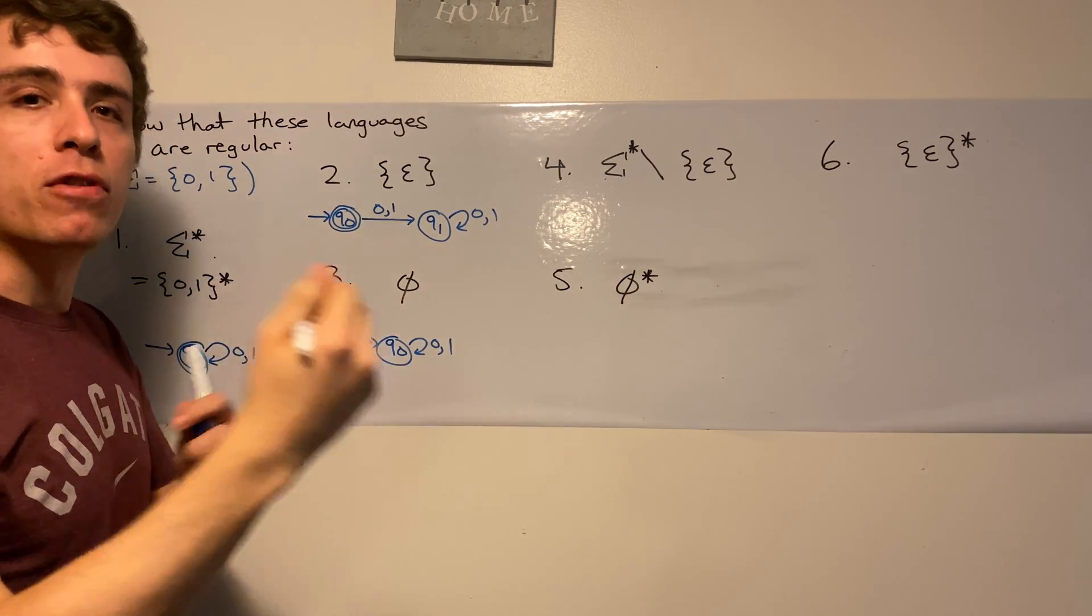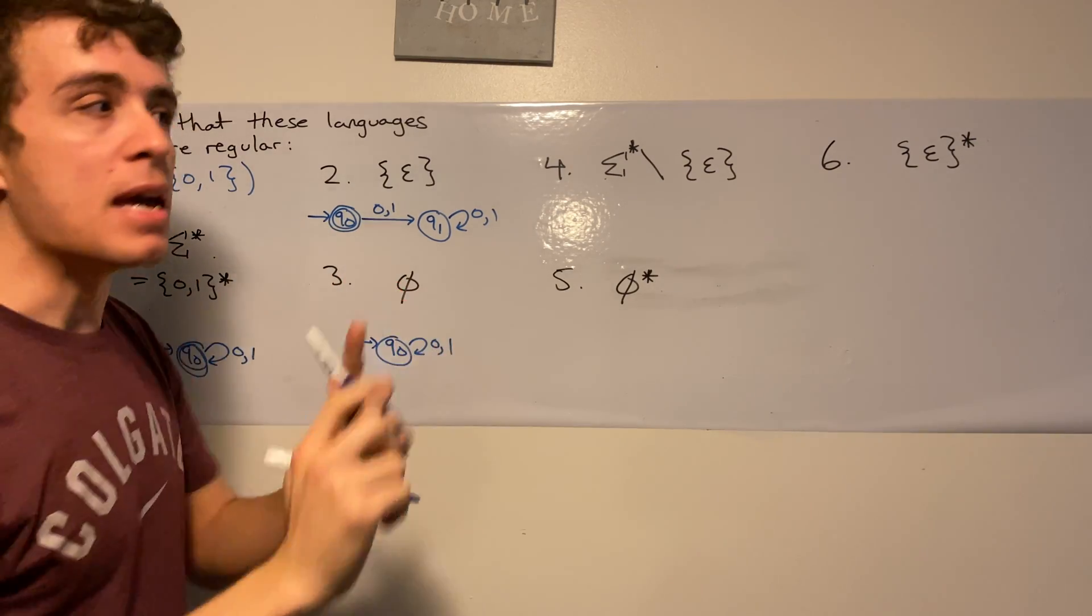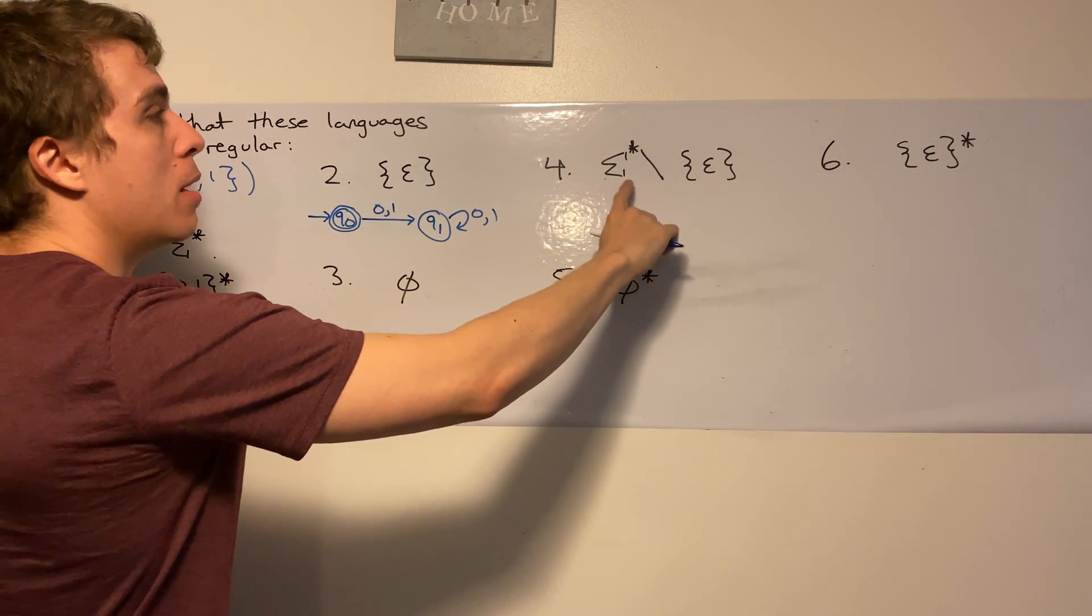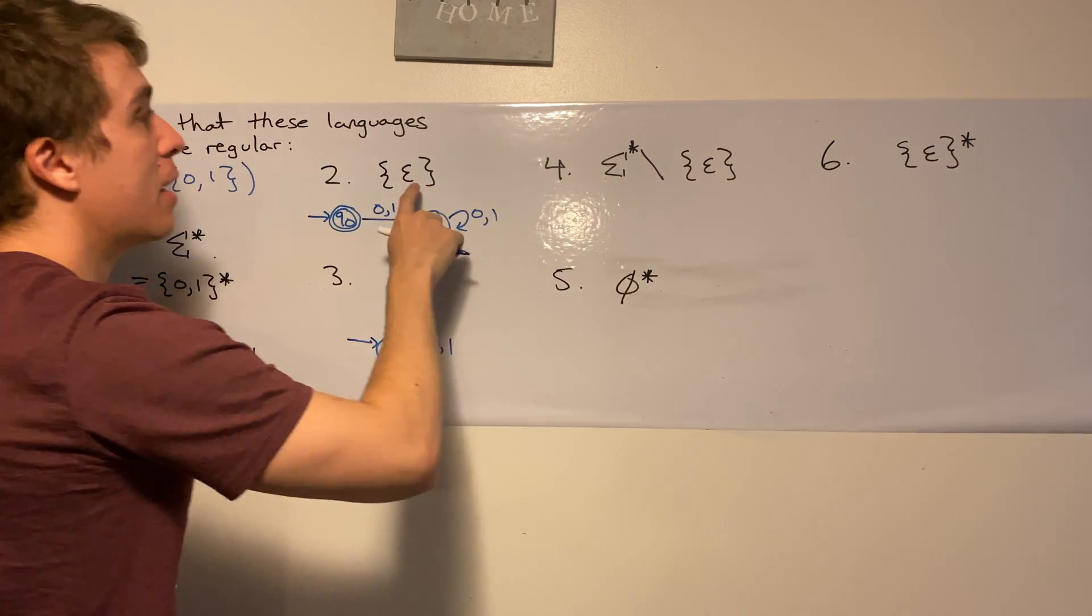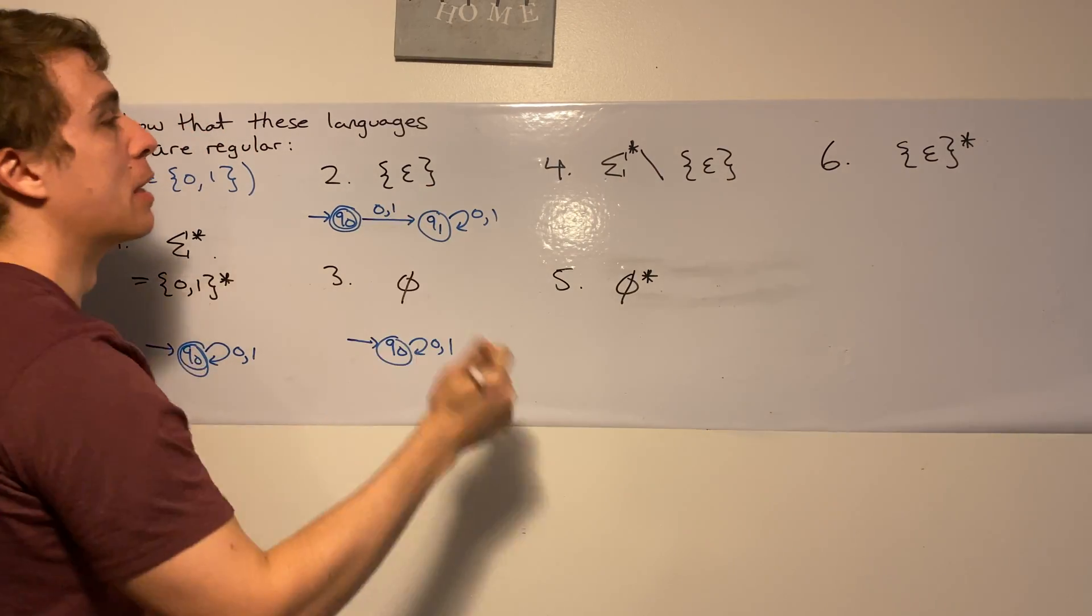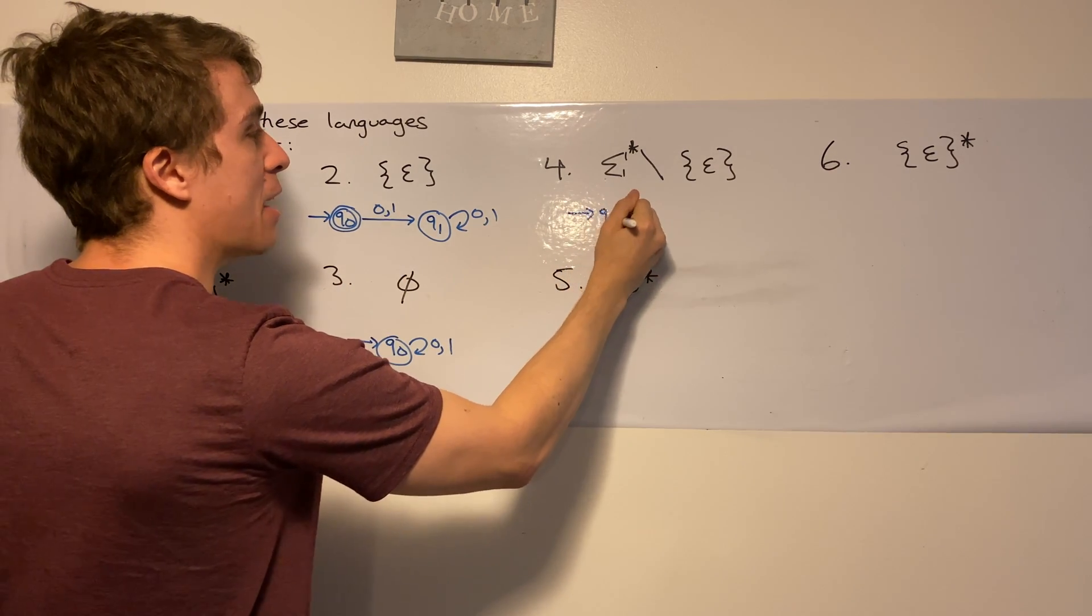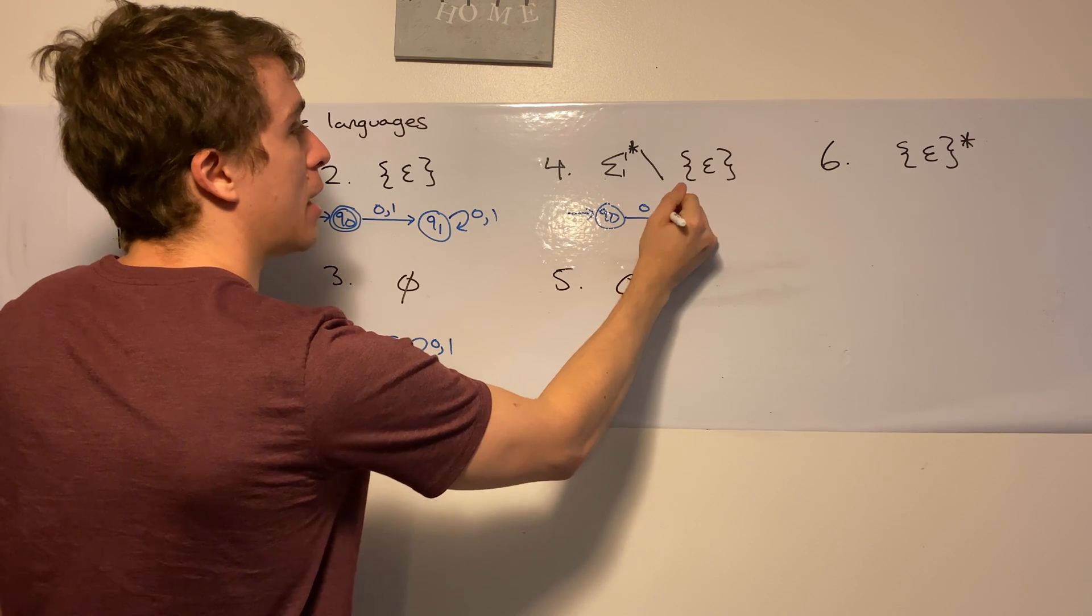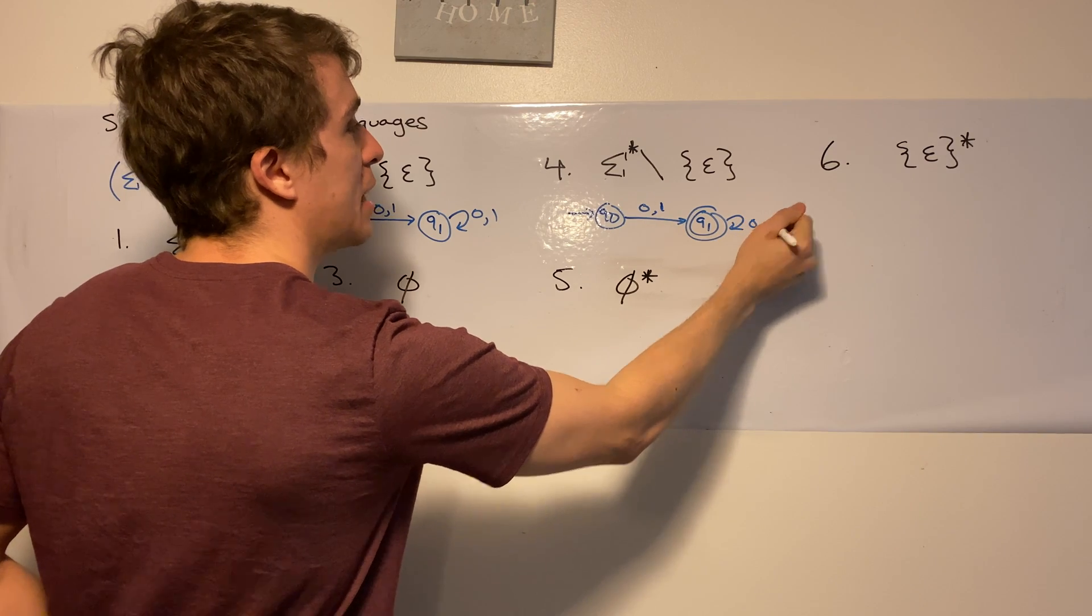remember, if we flip the final and non-final states of a DFA, then we can get the complement language. Well, is this the complement language? Well, this is every string but the empty string, and this one is the empty string. So in fact, we can make exactly the same DFA, but flip the non-final and final states. Just like this.